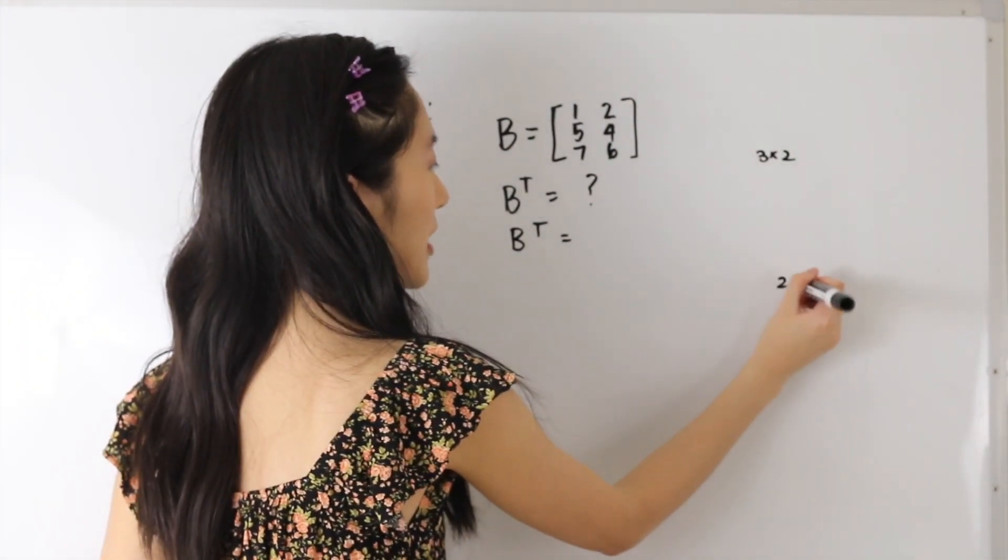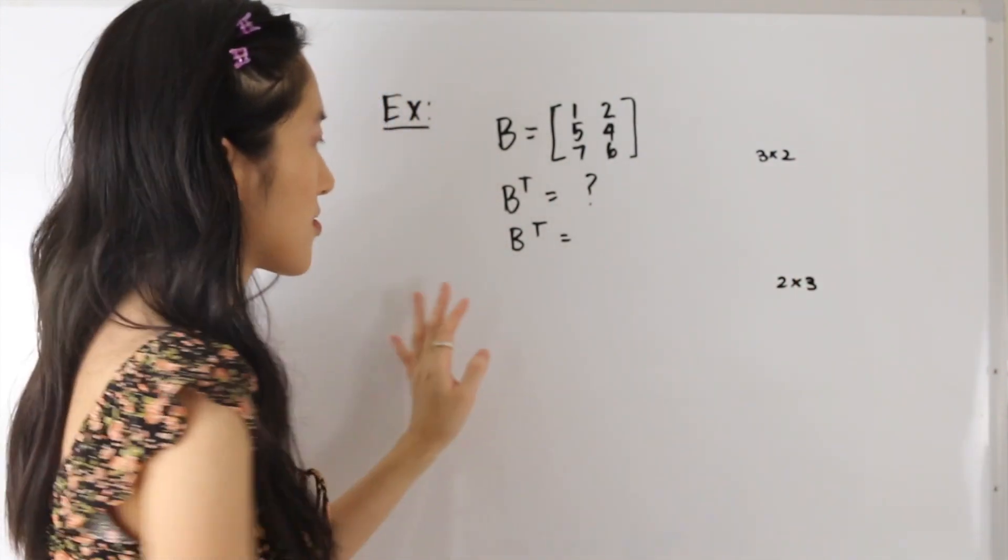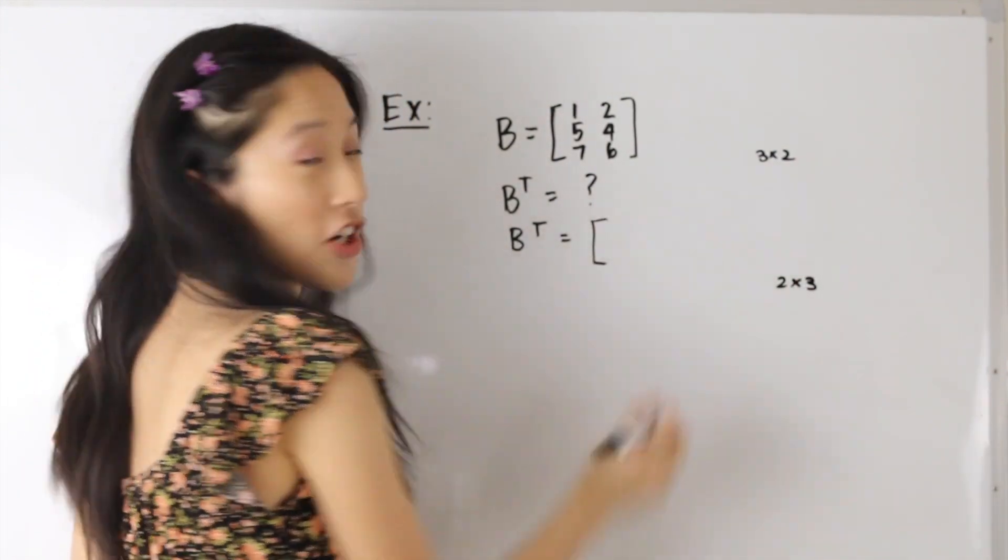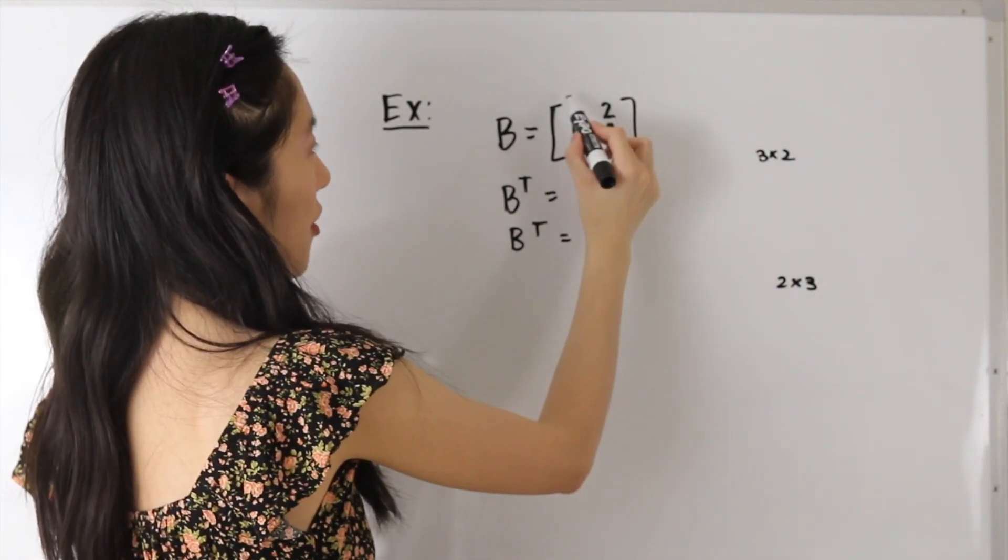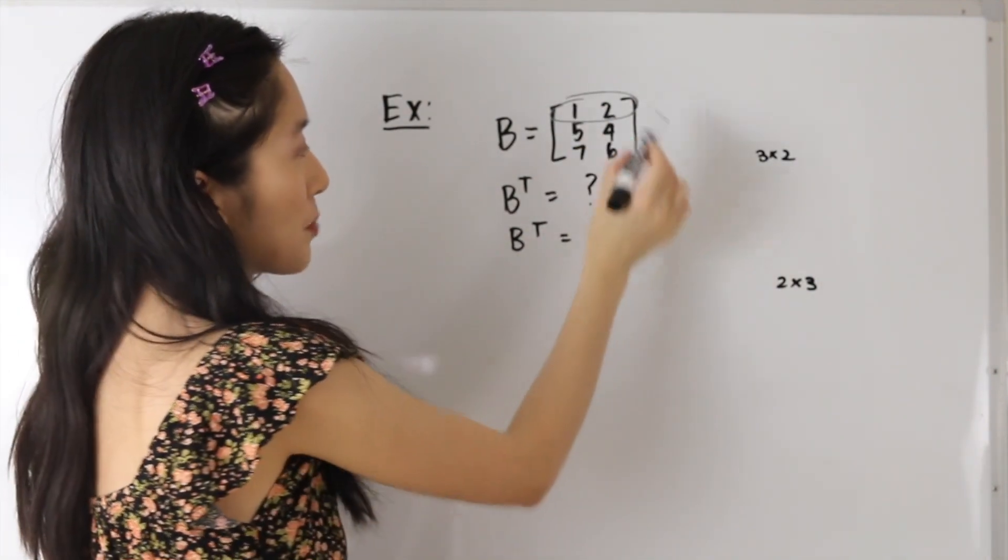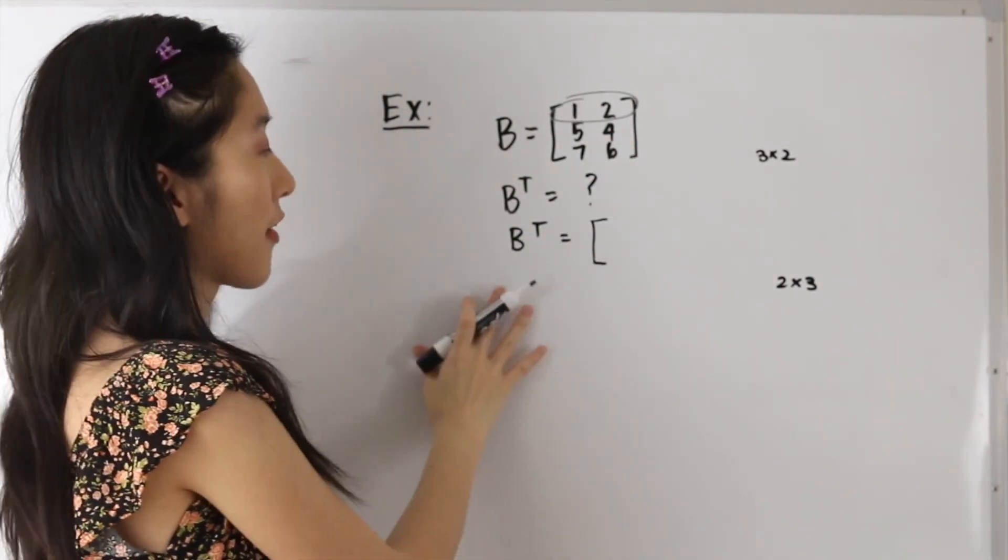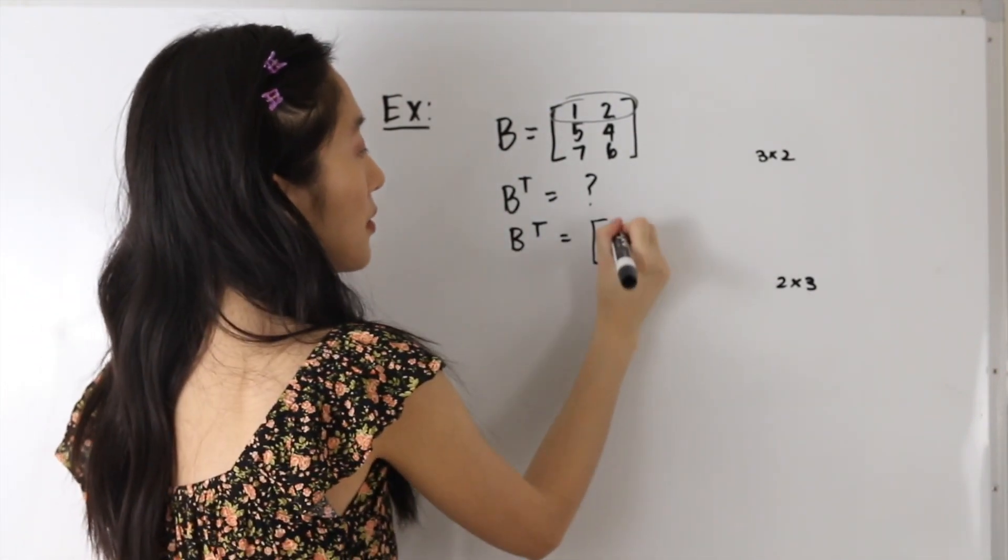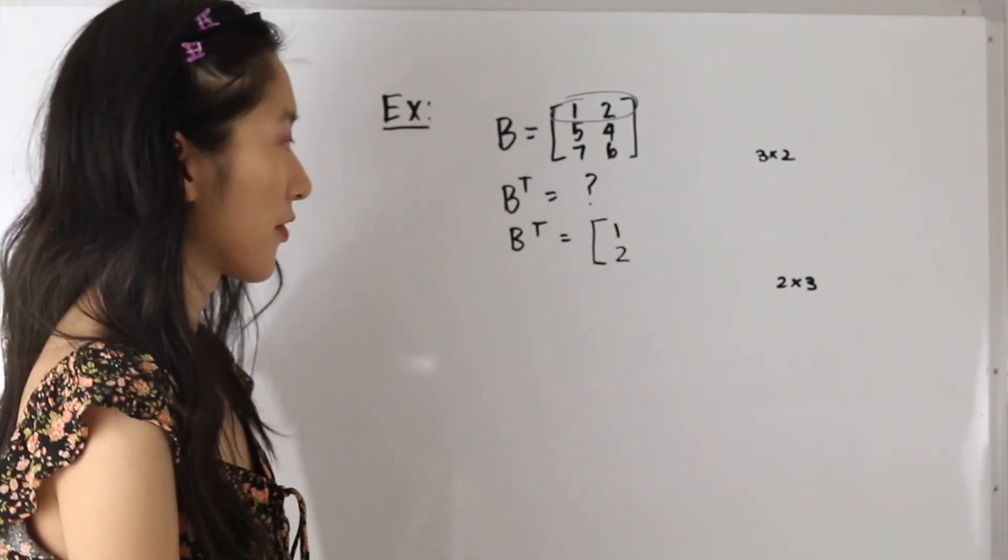So this will be a 2 by 3 matrix. Let's go ahead and determine what our transpose is. First, let's start off with our first row here. This will become our first column in our transpose matrix. So we get 1, 2 for our first column.